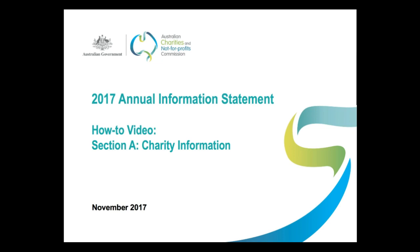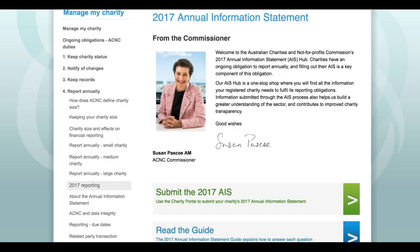All the information you'll see here is for a fictitious charity — it doesn't belong to an actual organisation. On the screen here is the ACNC's new 2017 Annual Information Statement hub. To begin work on your 2017 Annual Information Statement, you can click on the Submit 2017 AIS form button and log into the ACNC's charity portal.